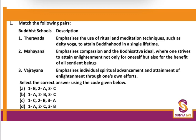Question 1: Match the following pairs — school and description. The technique is important here; information alone is not enough, you should know how to attempt the paper. First, read the description: 'emphasizes the use of ritual and meditation techniques such as deity yoga to attain Buddhahood in a single lifetime.' If you don't know this, move to the next description: 'emphasizes compassion and the Bodhisattva ideal.' The key term Bodhisattva is always associated with Mahayana, so 2 is matched with B. Eliminate options A and D.